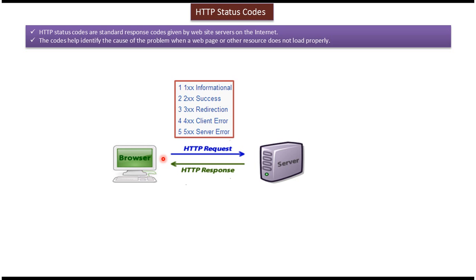There are 5 types of status codes available. The first one is the 100 series, which is informational. The second one is the 200 series, which is success. The third one is the 300 series, which is redirection. The fourth one is the 400 series, which is client error. And the fifth one is the 500 series, which is server error.